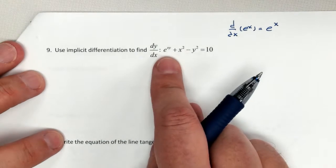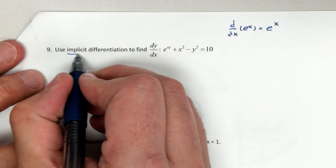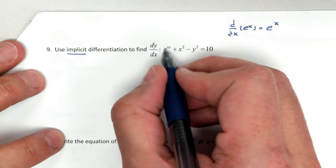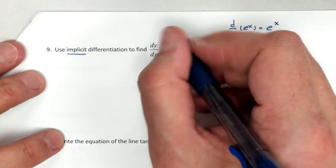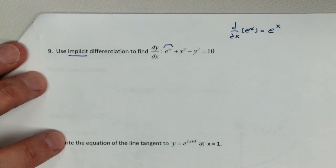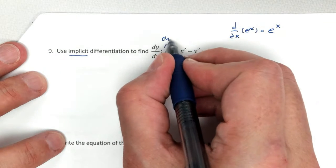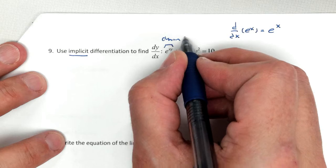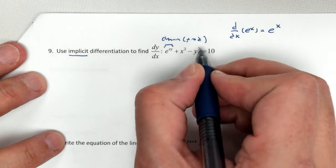When we take the derivative of e to the xy, now in this case we're going to be using implicit differentiation. I know I'm going to be using implicit because I have y's inside the equation. You want to be careful here. There is a chain rule, but even worse, we're going to be using our product rule.